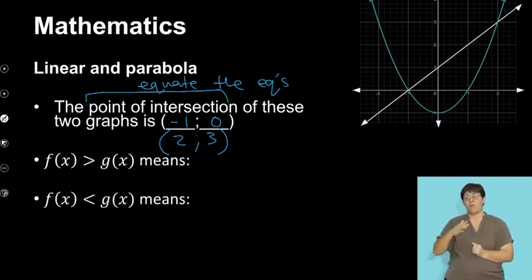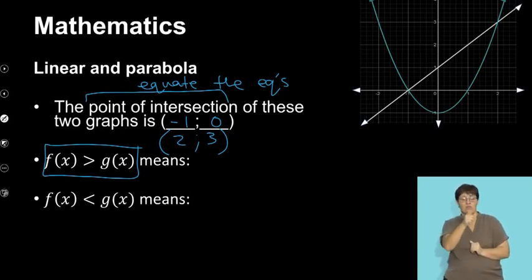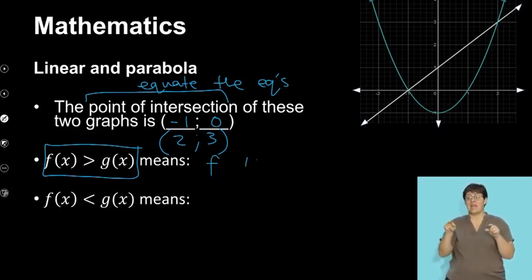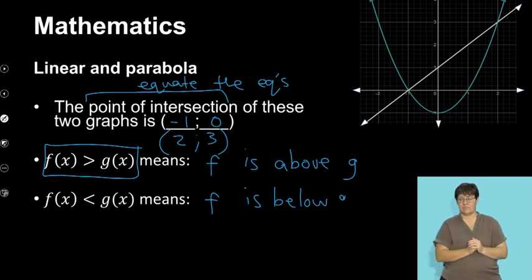Now, when they want you to analyze the two graphs, they will say, what does F of X greater than G of X or F of X less than G of X? What is the value that satisfies that condition? Now, I want you to understand what this means first. It simply means that F is above G. That's all. With this one, it means F is below G.